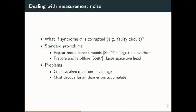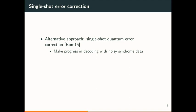Both generic approaches incur large overhead, which could weaken quantum advantage. More importantly, as we heard in the last few talks, we could run into backlog problems if we're not able to decode faster than errors accumulate. An alternative, proposed by Bombin, is single-shot quantum error correction. The idea is that sometimes the decoding problem has so much structure that even when the decoder takes in faulty syndrome data as input, it can still make progress in decoding.